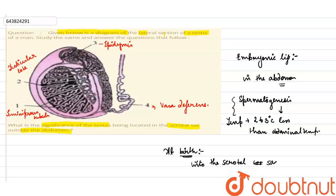The temperature is 2 to 3 degrees less. So as the temperature is 2 to 3 degrees less, spermatogenesis can be held.